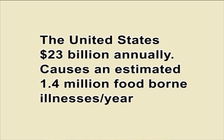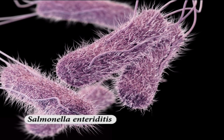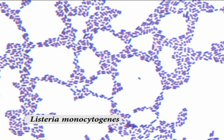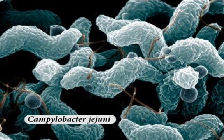Foodborne illness costs the United States $23 billion annually and causes an estimated 1.4 million foodborne illnesses per year. Foodborne illness usually arises from improper handling, preparation or food storage. Good hygiene practices before, during and after food preparation can reduce the chances of contracting an illness. The major foodborne illness causing microorganisms are E. coli O157:H7, Salmonella enteriditis, Listeria monocytogenes, Vibrio species and Campylobacter jejuni.